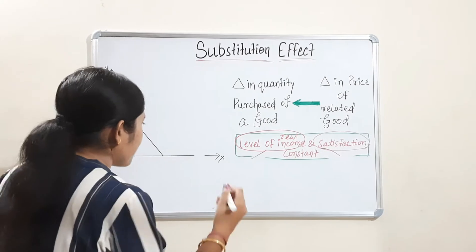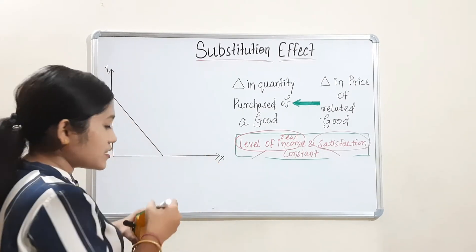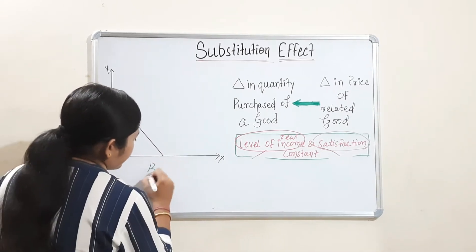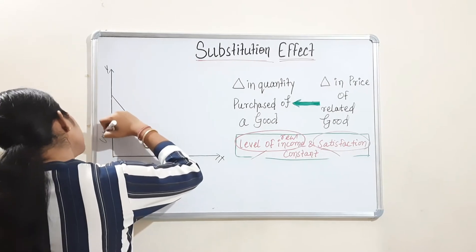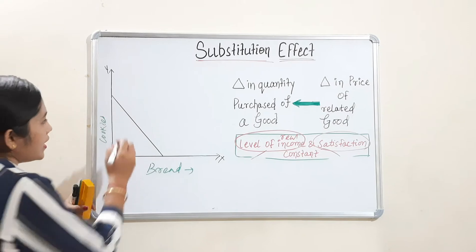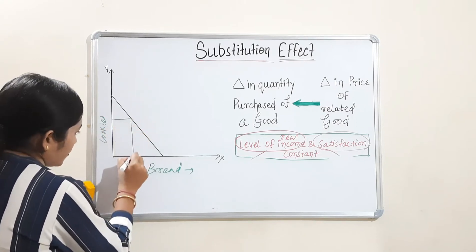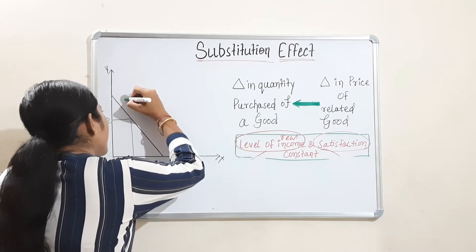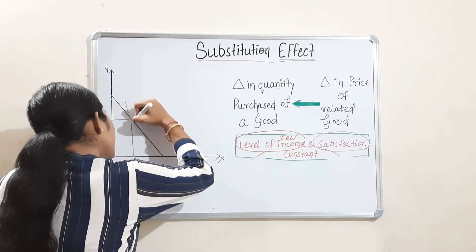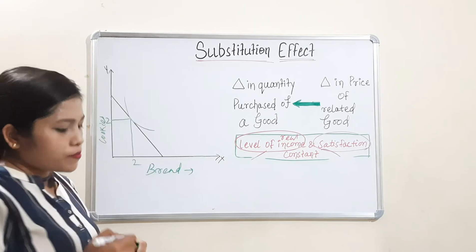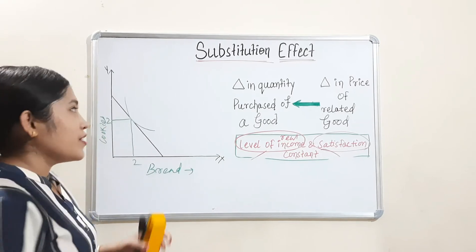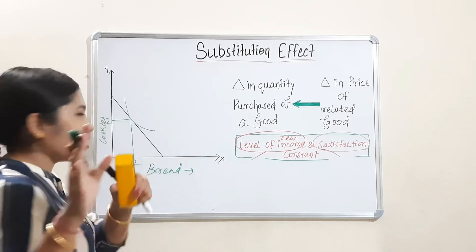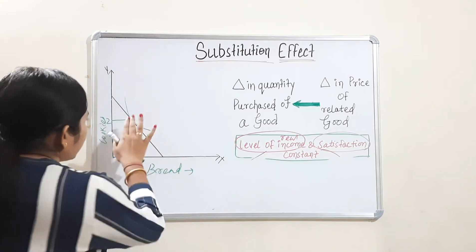If you want to plot this on a graph — because graph is very important in this concept — on the x-axis we will take bread and on the y-axis we will take cookies. Let's say the consumer is operating at the point where 2 bread and 2 cookies are consumed. The point at which the indifference curve is tangent to the budget line is called the consumer equilibrium point. I have covered this; you can access that video through the link in the description box.